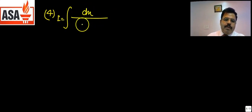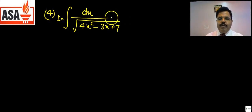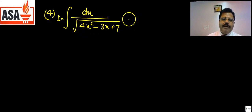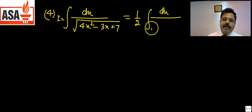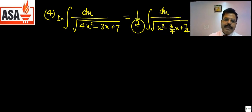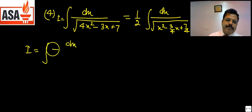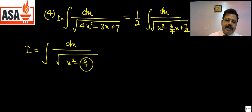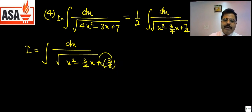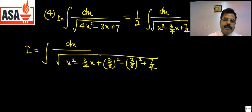Another example: dx upon √(4x² minus 3x plus 7). Take 4 common: it becomes 1/2 times dx upon √(x² minus 3/4 x plus 7/4). The coefficient of x is minus 3/4, half is minus 3/8, square is 9/64. Add and subtract 9/64. This gives (x minus 3/8)² plus (7/4 minus 9/64) inside the root.